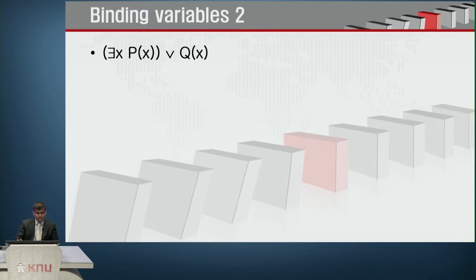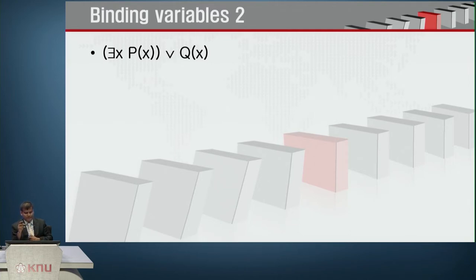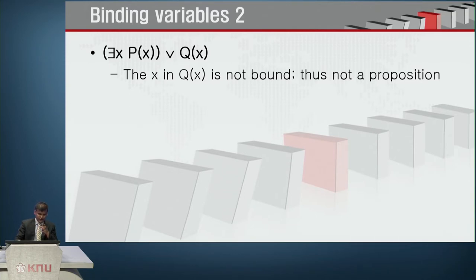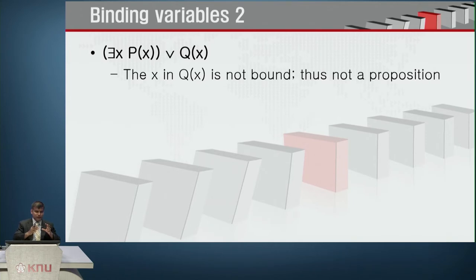You can have other forms as well. For example, if you have: for all values of x, x equals x plus 1. You can check whether this would be true or false. If you give a value of x as 2 or 3, you can definitely say that this is going to be false. That is why in binding of variables, we are assigning values to individual variables using quantifiers.